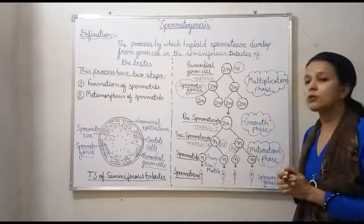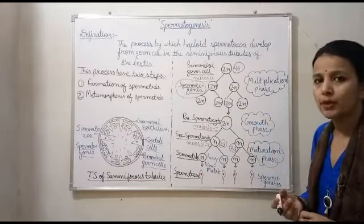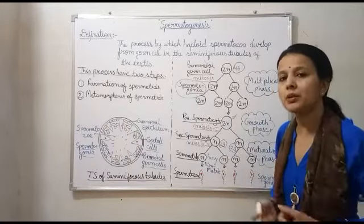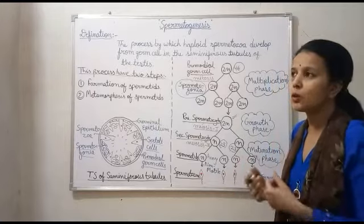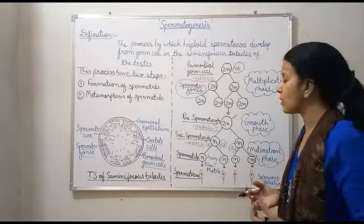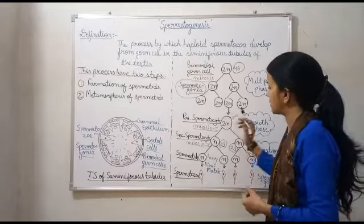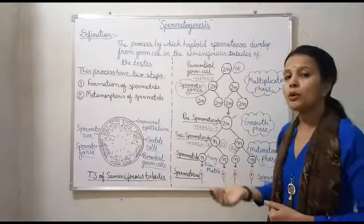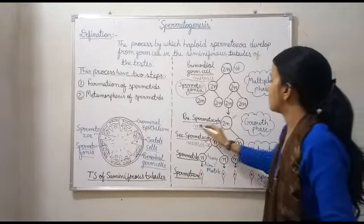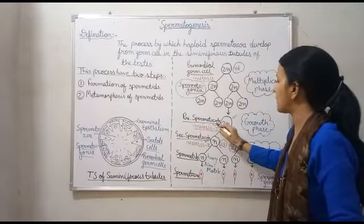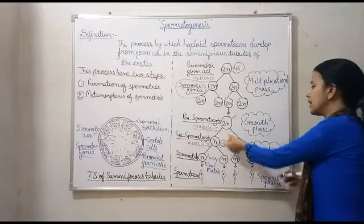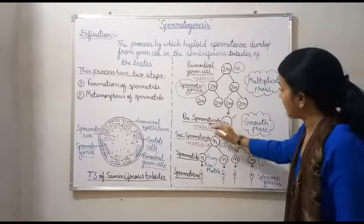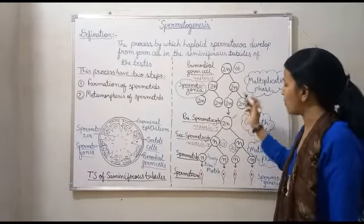अब इन cells के अंदर आगे जाके particular cell grow करती है — सारी cells grow नहीं करतीं, particular cell अपना size increase कर लेती है और size में enlarge हो जाती है। तो जो cell अब आगे prepare है, this cell will be called as primary spermatocyte। जब इसने grow कर लिया, उस phase को हमने growth phase बोला। Primary spermatocyte यहाँ form हो चुकी है।